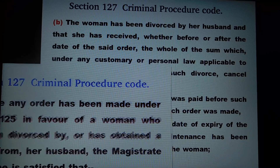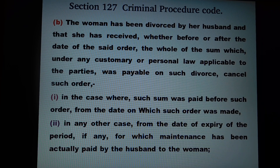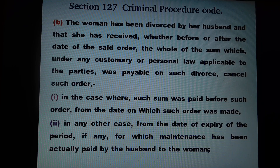As per subsection 3, clause b, the woman has been divorced by her husband and that she has received, whether before or after the date of said order, the whole of the sum which under any customary or personal law applicable to the parties was payable on such divorce, cancel such order: 1. In the case where such sum was paid before such order, from the date on which such order was made; and 2. In any other case, from the date of expiry of the period, if any, for which maintenance has been actually paid by the husband to the woman.